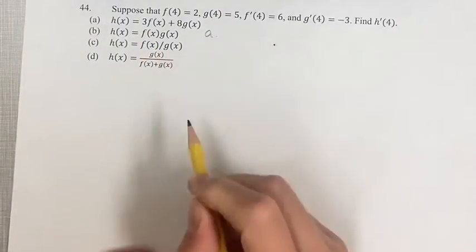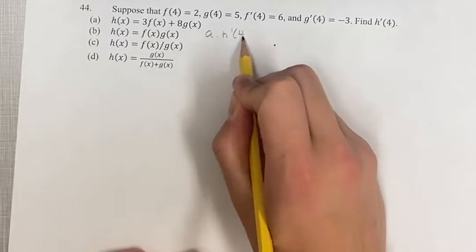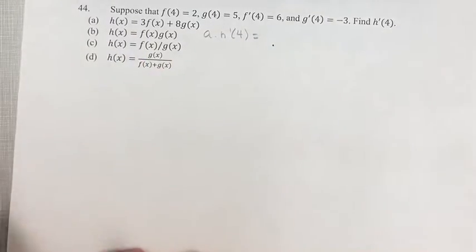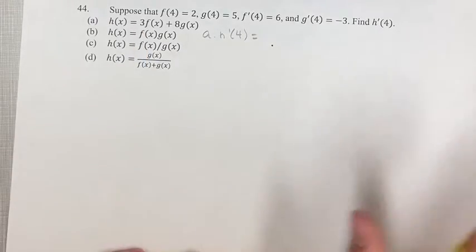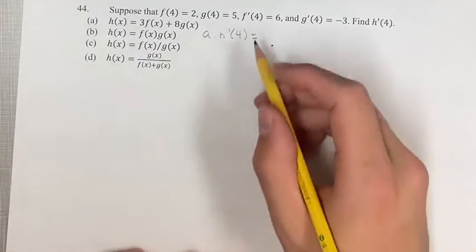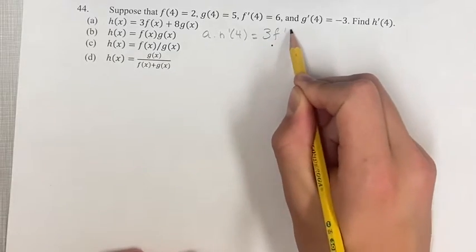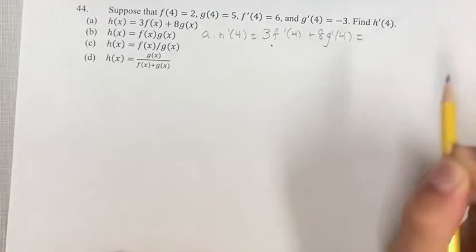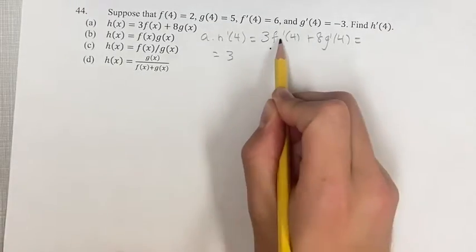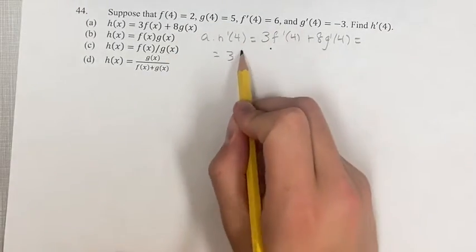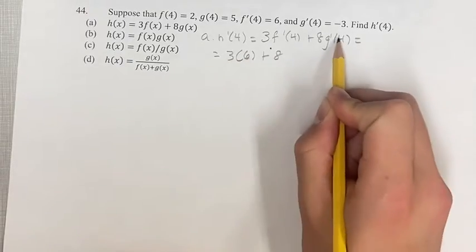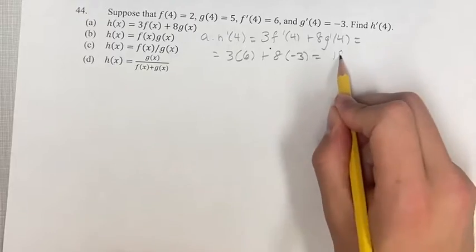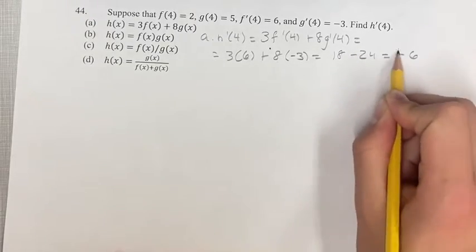For part a, h prime of 4 equals — we have no products or quotients of functions here, it's just constants and functions, so we don't have to worry about any product rule or anything like that. It's just 3 times f prime of 4 plus 8 times g prime of 4. Plugging in, we have 3 times 6 plus 8 times negative 3. This is 18 minus 24, which is negative 6.